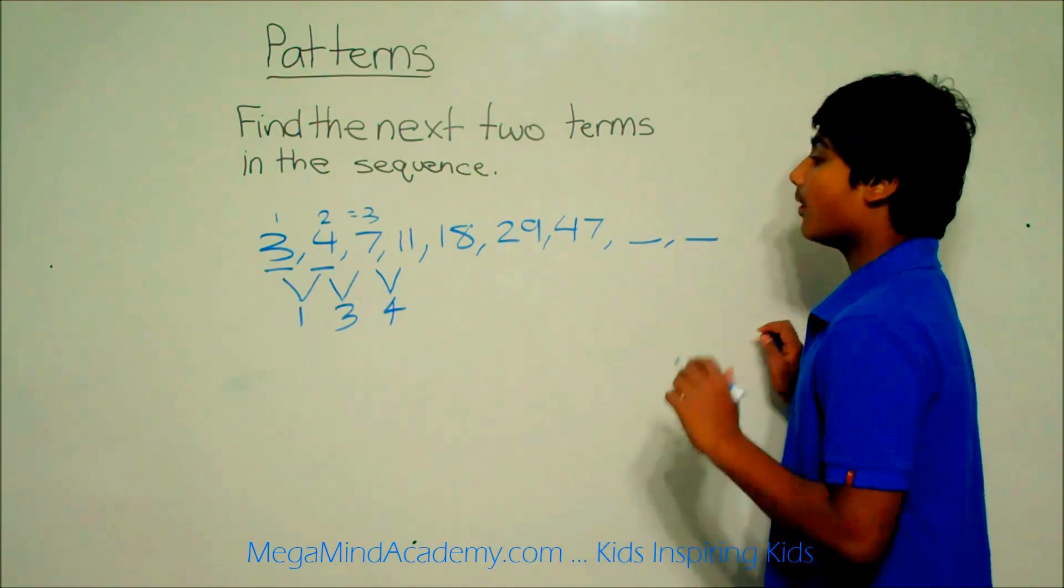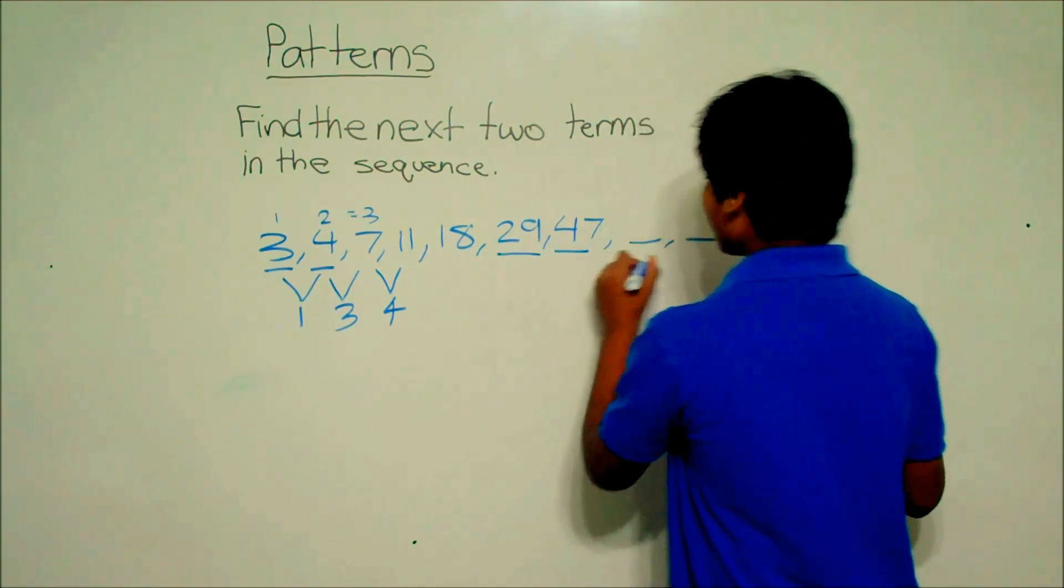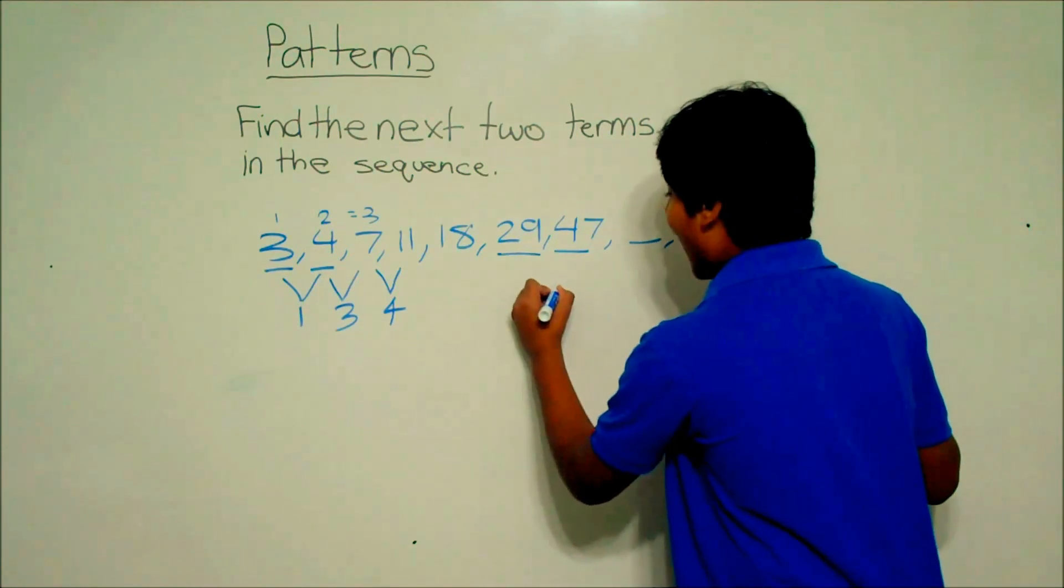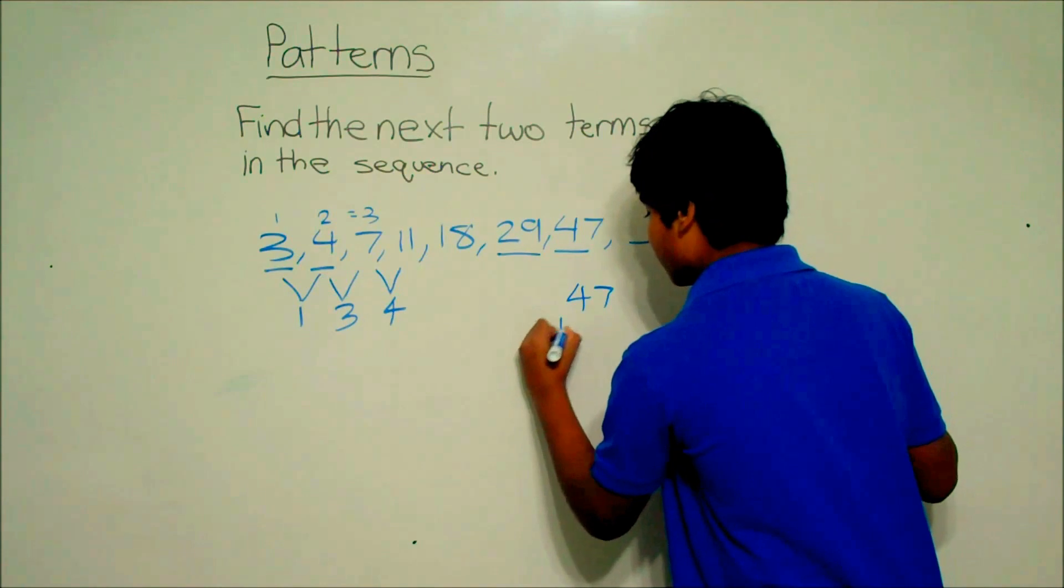Now to solve the pattern, we have 29 and 47. In order to find the next term, we have to add 29 and 47. So, 47 plus 29.